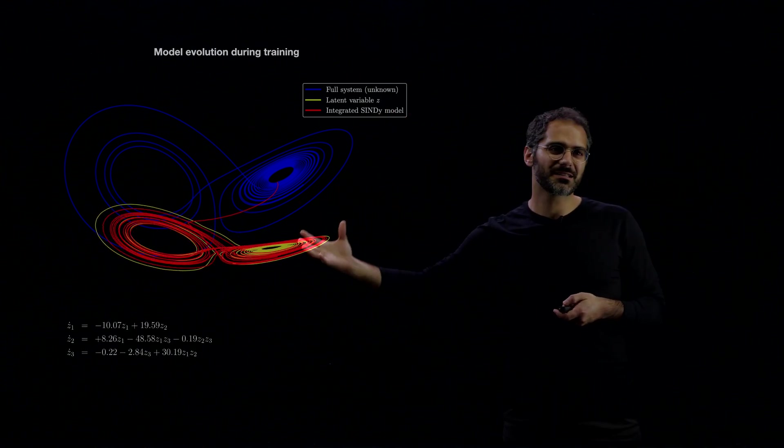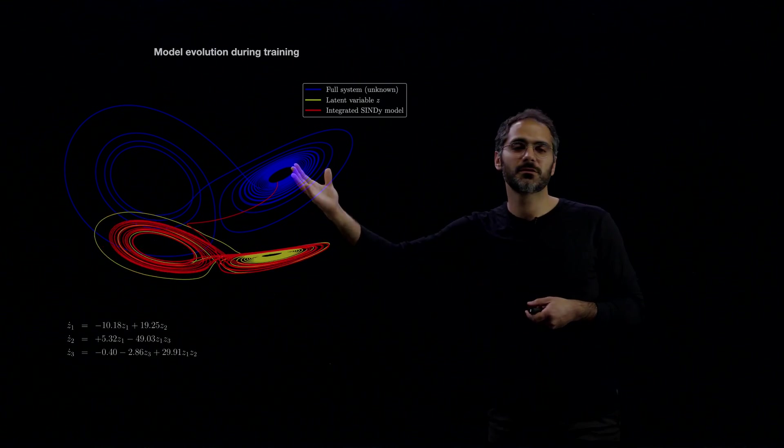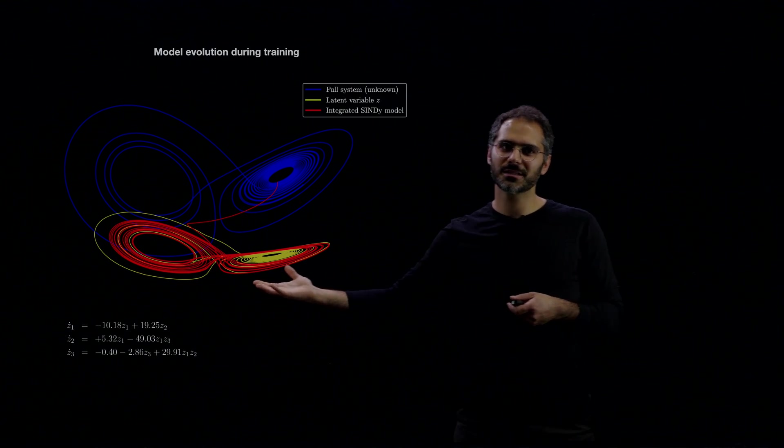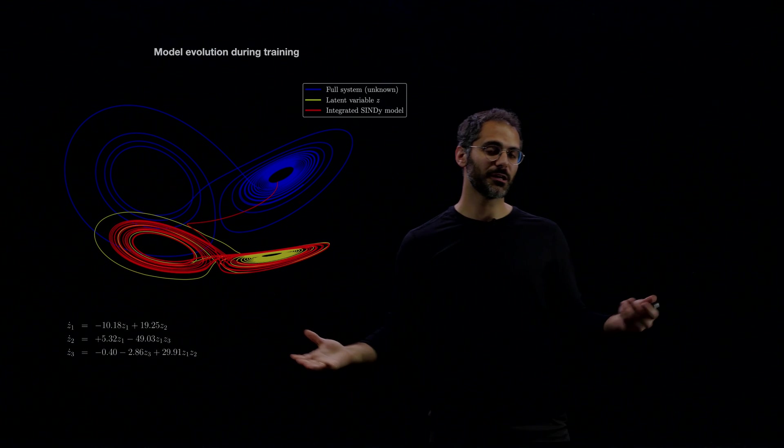So you can see that SINDy does a good job learning from the latent variable. But of course with time as the system is trying to minimize the sparsity of the solution, the attractor slowly drifts away from the original system because it has no information as to the other dimensions.